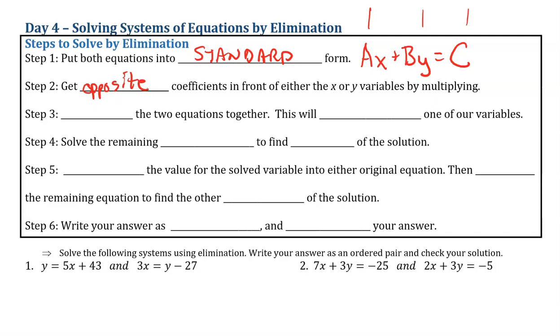And then we add the two equations together. We can do that because we have an equal sign. Everything on the left is equal to everything on the right. So when we add the left side of the equation to the left side of a second equation, it's going to be equal to the sum of the two right sides. And when we do this, it will eliminate one of our variables.